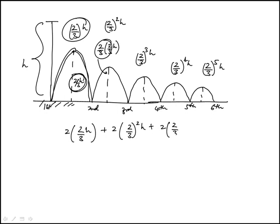Plus twice two-thirds cubed h plus all the way to two-thirds to the fifth h. So that's what we're looking for. We just have to write it in the summation notation. We notice we can just take out 2h outside.